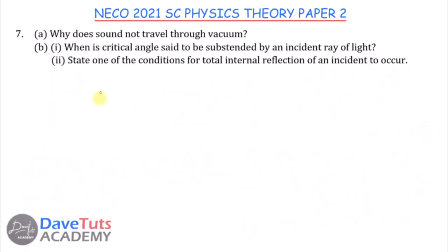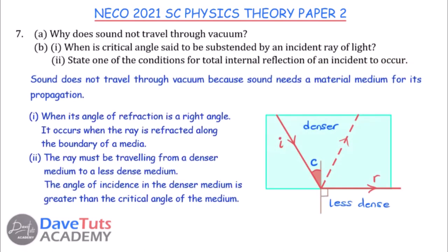Why does sound not travel through a vacuum? Sound does not travel through vacuum because sound needs a material medium for its propagation. Since vacuum has no medium, sound cannot travel through it.